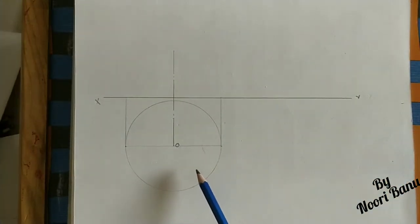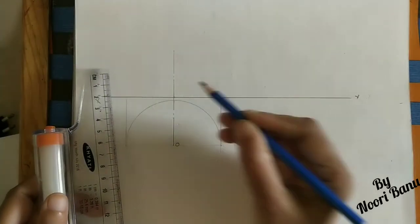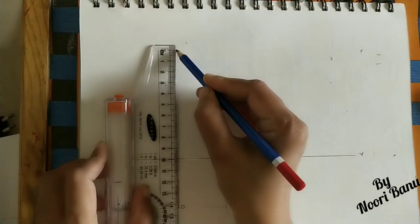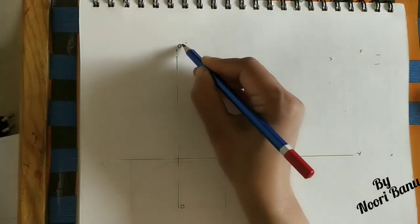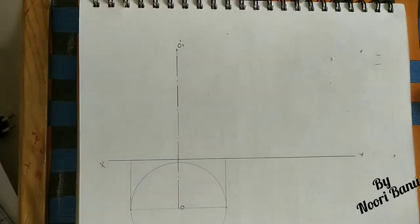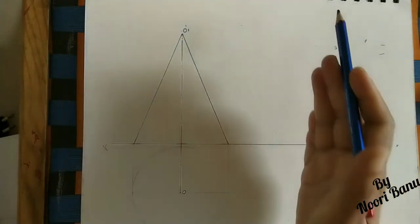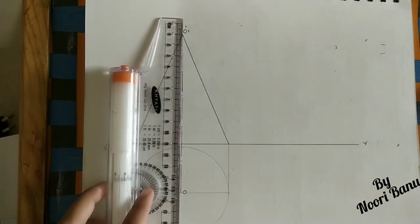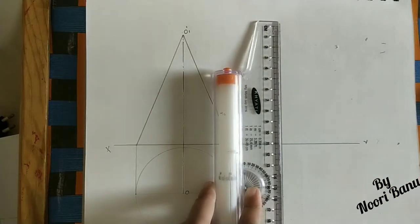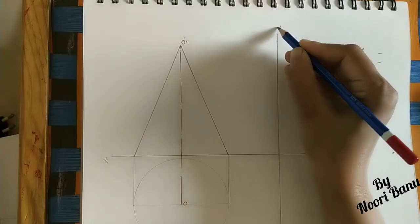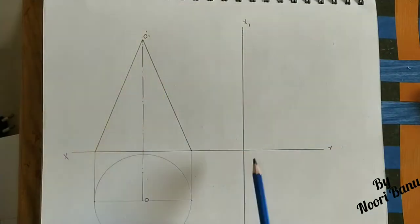For the front view, extend the axis line upward 10 cm. Mark the apex point as O1-dash and join the two base projector points to this apex to complete the triangular front view. For the side view, draw a new reference line X1Y1. From all points, draw projector lines to this reference line.